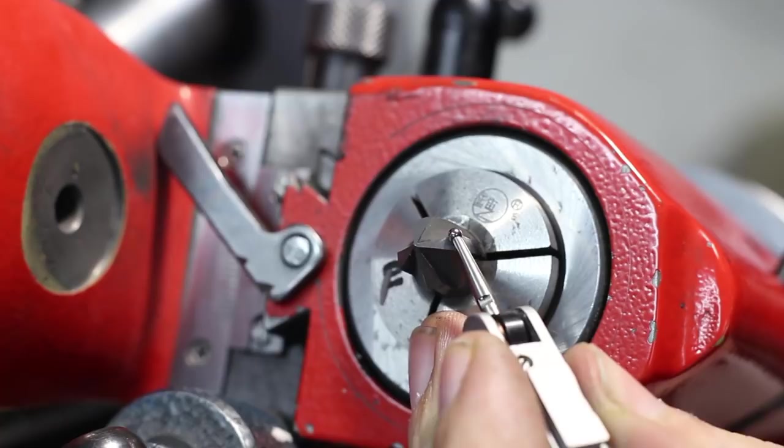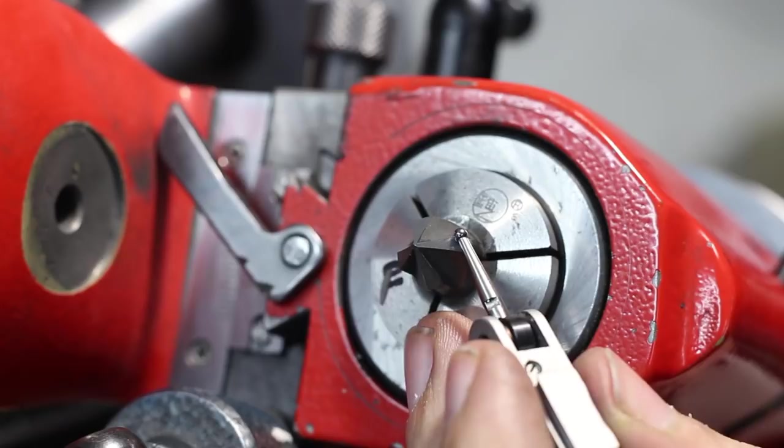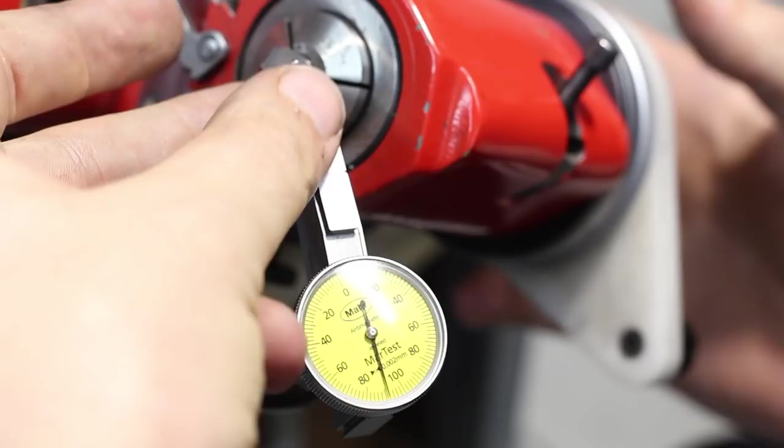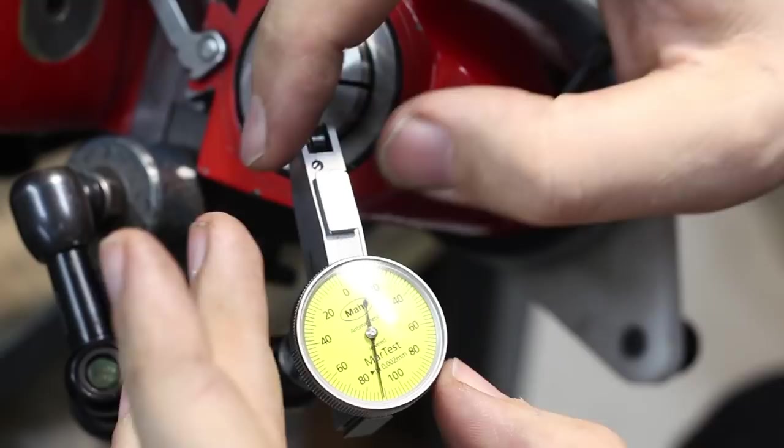This is a 2 micron dial test indicator, so this might be a little bit annoying. Find the real high spot here, which is in this case 90. Let's zero this out. It might be easier.